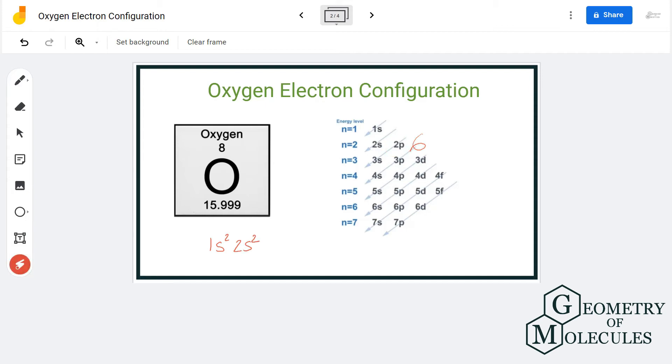And d orbitals can hold up to ten electrons. But here we have already used four out of eight electrons, which means we are left with another four electrons, and hence it would be 2p⁴. So there are two electrons in the 1s orbital, two electrons in the 2s orbital, and four electrons in the 2p orbital.